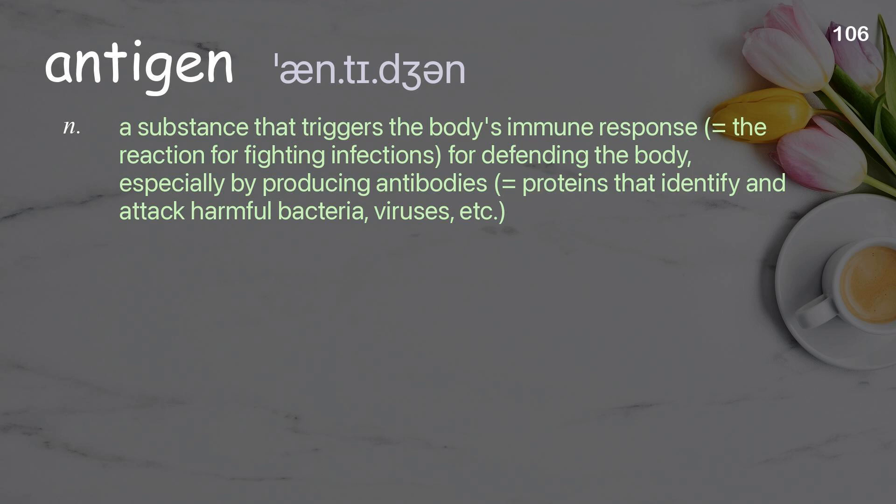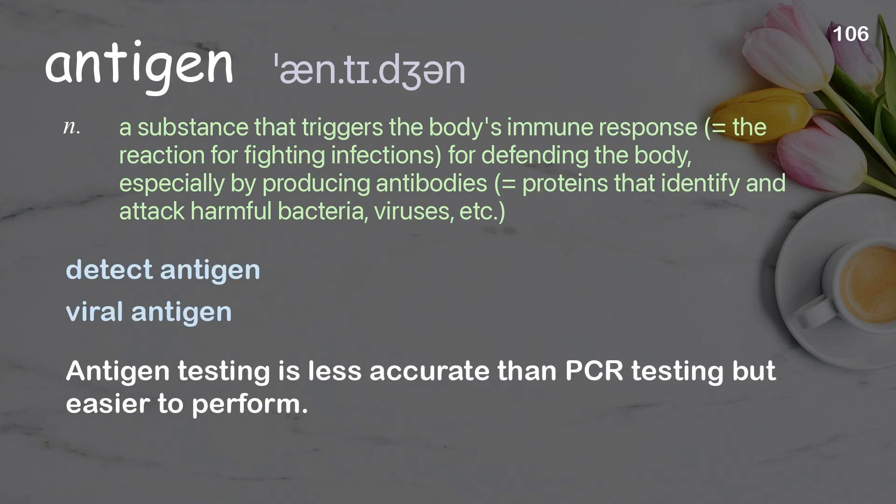Antigen: a substance that triggers the body's immune response — the reaction for fighting infections, for defending the body — especially by producing antibodies, which are proteins that identify and attack harmful bacteria, viruses, etc. Examples: detect antigen, viral antigen. Antigen testing is less accurate than PCR testing, but easier to perform.